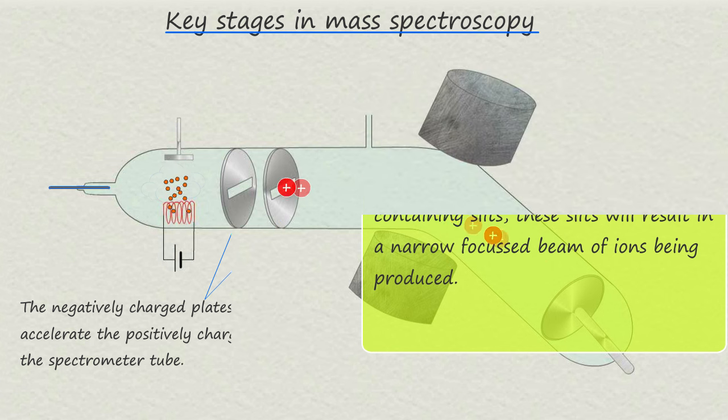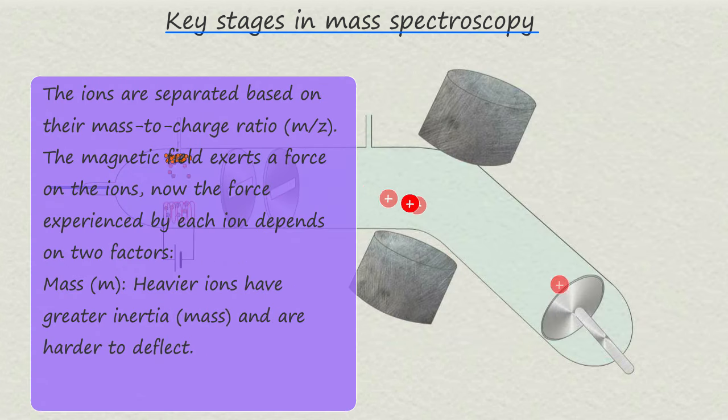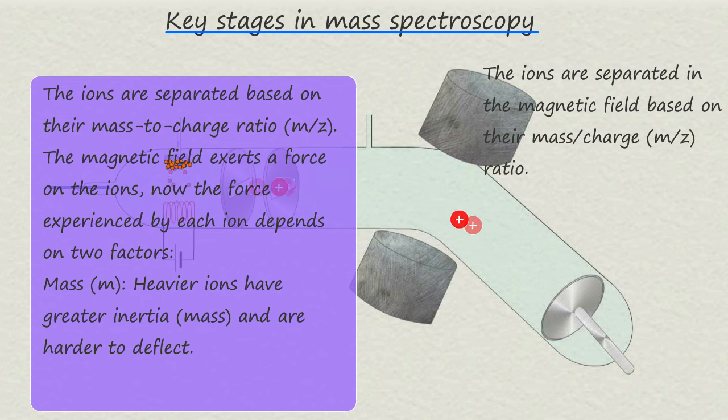The next stage in the mass spectrometer is perhaps the most crucial. The deflection stage of a mass spectrometer plays a crucial role in separating ions based on their mass to charge ratio. And here's how it works.